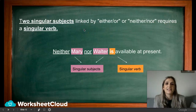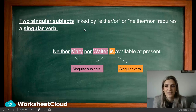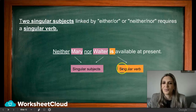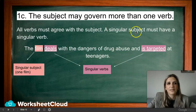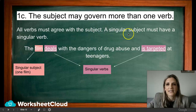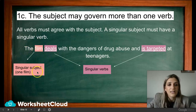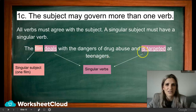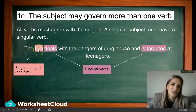Two singular subjects linked by 'either...or' or 'neither...nor' require a singular verb — these are rules you just have to study. 'Neither Mary nor Walter is available at present.' The subject may govern more than one verb, and all verbs must agree with the subject. A singular subject must have a singular verb. For example: 'The film deals with the dangers of drug abuse and is targeted at teenagers' — both verbs, deals and is, are singular to match the singular subject.